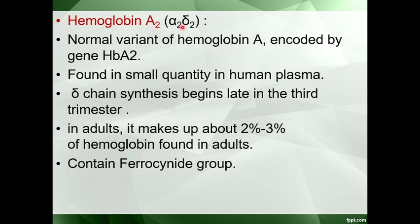Hemoglobin A2 is composed of two alpha chains and two delta chains. It is a normal variant of hemoglobin A, encoded by the gene HPA2. Protein is synthesized from DNA through transcription to mRNA, which is then translated into the protein. Hemoglobin A2 is found in small quantity in human plasma.